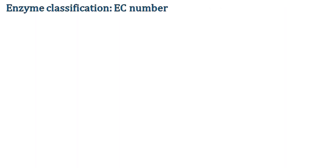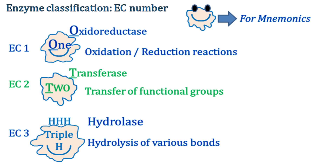Enzymes are classified on the basis of the reactions which they catalyze. The term EC number is used in the classification, where EC stands for Enzyme Commission. The enzymes are classified into six main types.